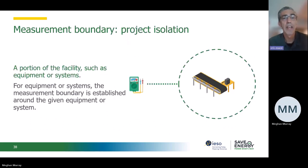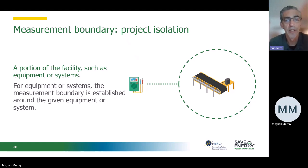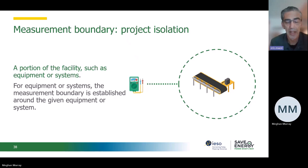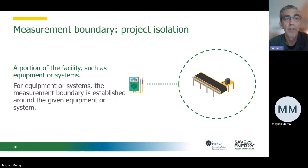Retrofit isolation is the other common measurement boundary, where you draw a boundary around the project itself. For example, those ventilation fans mentioned earlier — the measurement boundary was around the fans, motors, and VFD drives; it was not around the whole building. So that's another common measurement boundary choice.